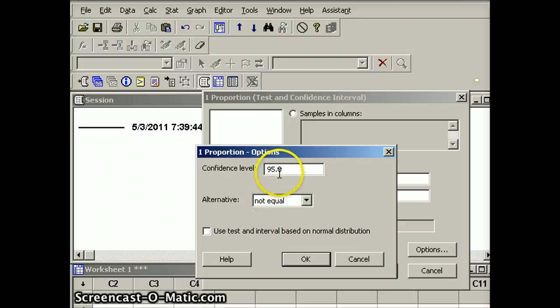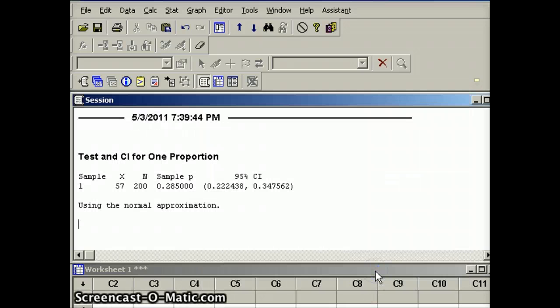So the confidence level: we wanted 95% confidence interval so we're going to leave that. We're not going to concern ourselves with this yet. We are going to click the button that says use test and interval based on normal distribution, since we are using a z; that's the model that Minitab should use as well.